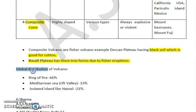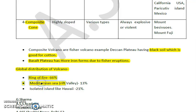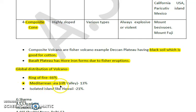Now let's look at the global distribution of volcanoes. The Ring of Fire in the Pacific Ocean accounts for 66 percent of volcanic eruptions, which is the maximum. This is followed by the Mediterranean Sea and Rift Valley contributing around 13 percent, and isolated islands like Hawaii contributing approximately 21 percent of volcanic eruption activity across the globe.